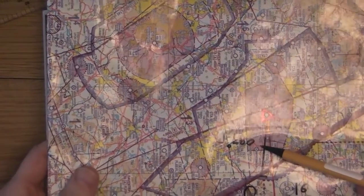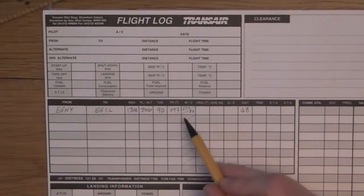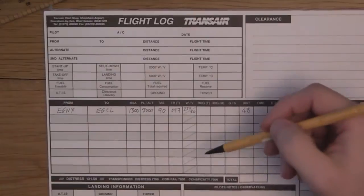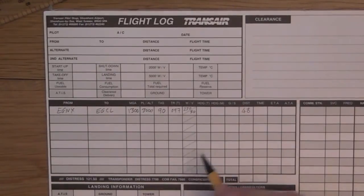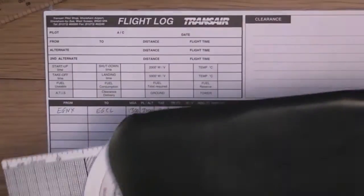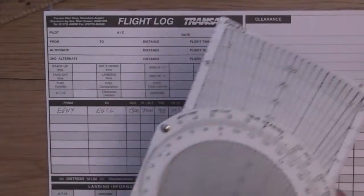That's the 097 we used our square protractor to get. We have a fictitious wind today of 230 at 30 — that's a wind coming from 230 degrees true at 30 knots. All forecast winds are true winds; the ones you get on the ATIS at the airport are magnetic. There's a crosswind component and also a tailwind component. It's time to introduce everyone's least favourite bit of kit — the circular slide rule, the CRP5.